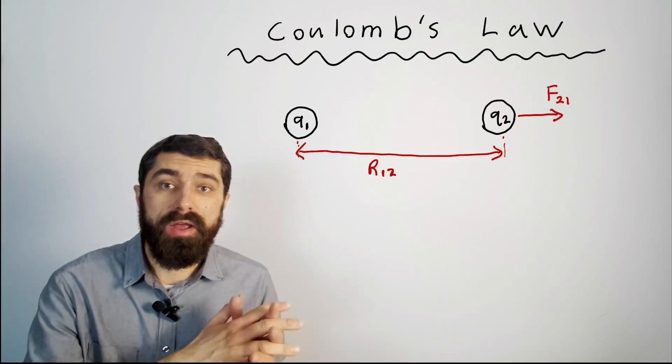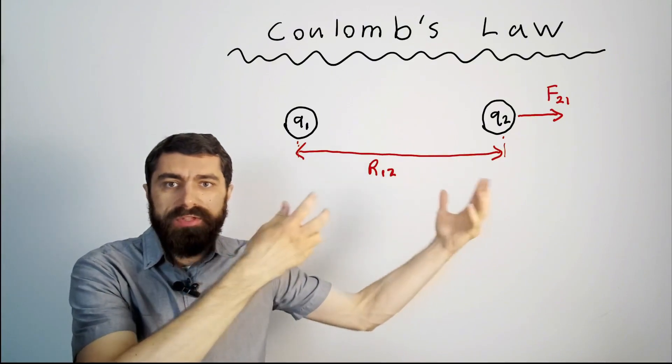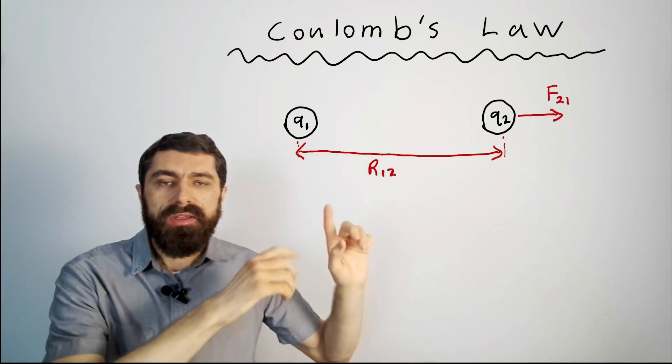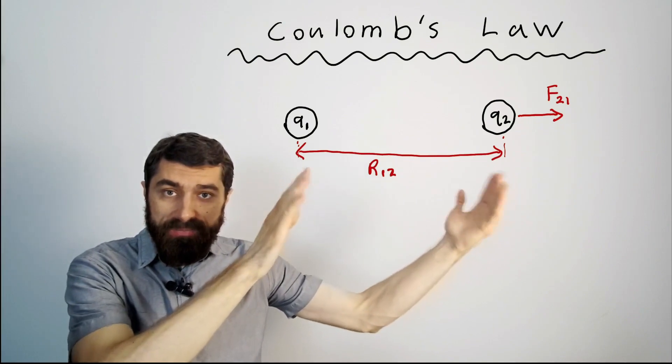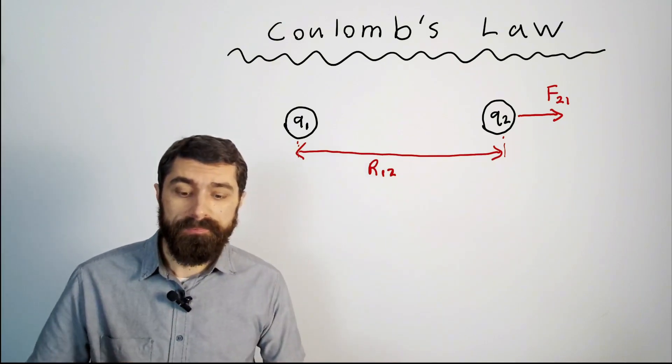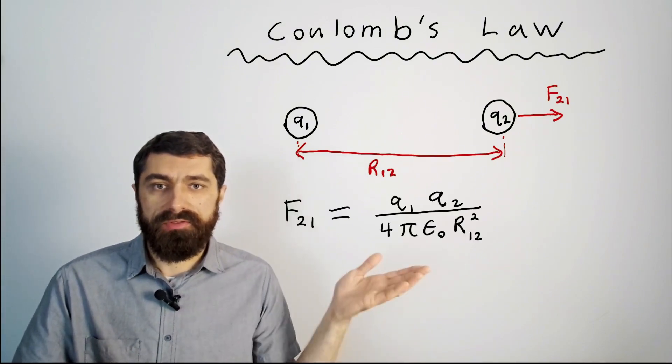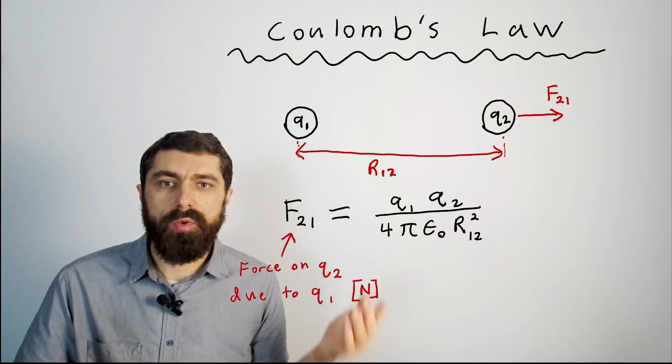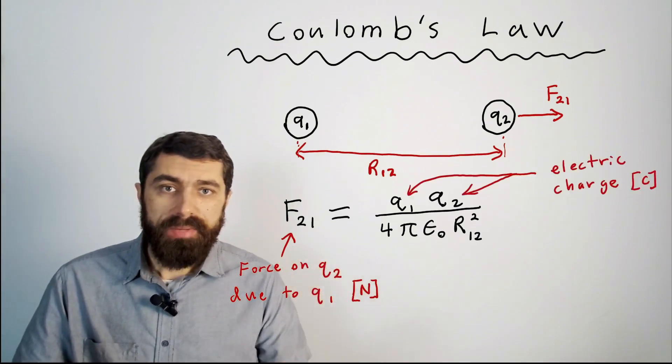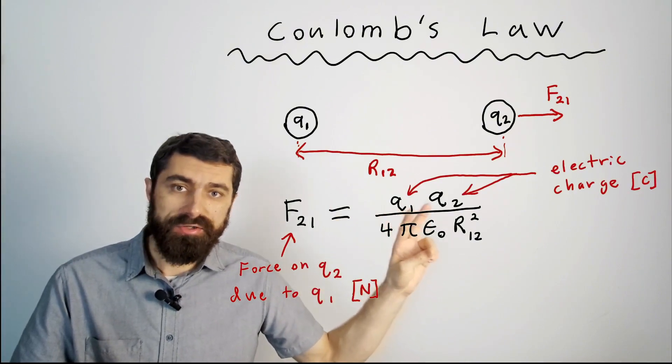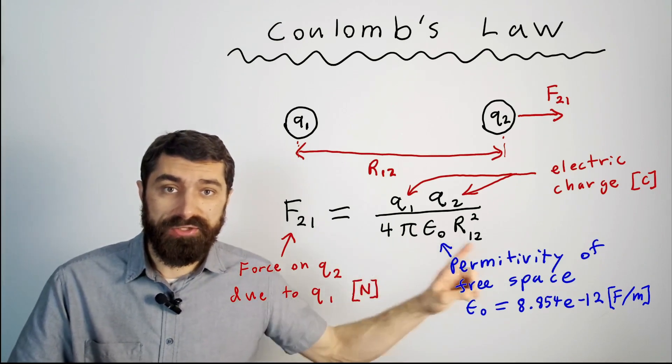Coulomb's law applies when you have two electric charges that are stationary or if they're moving really slowly. So if you have two charges here q1 and q2 and they're separated by a certain distance r12, you can calculate the force on one of the charges with the following formula. f21 is the force on charge two due to one.